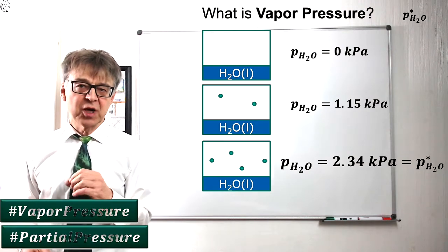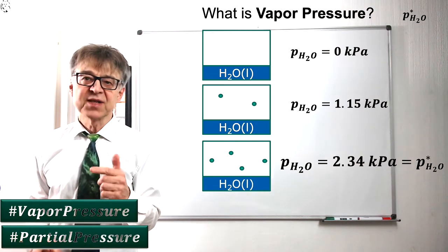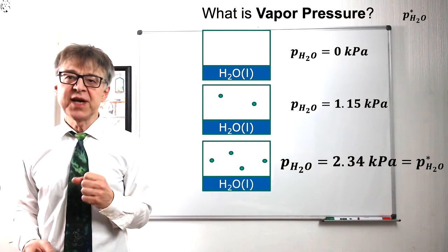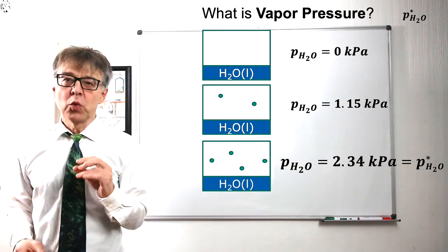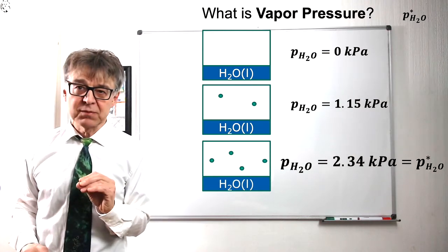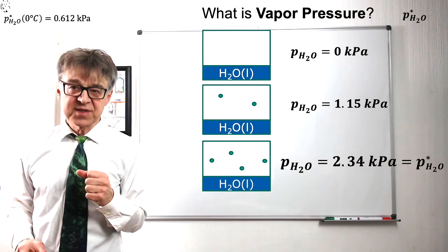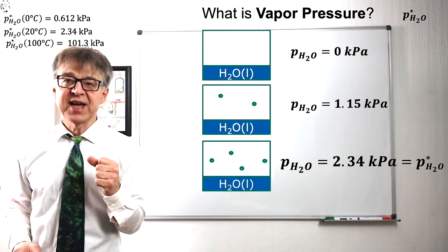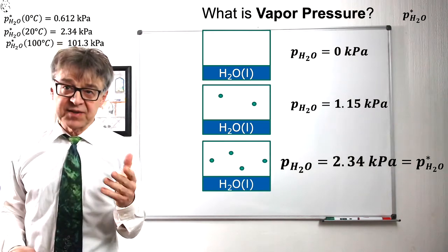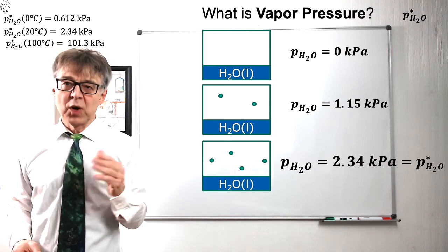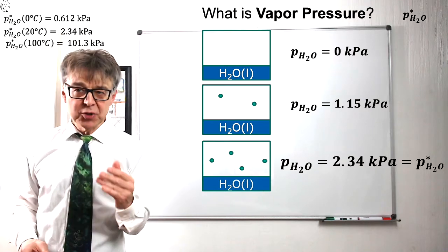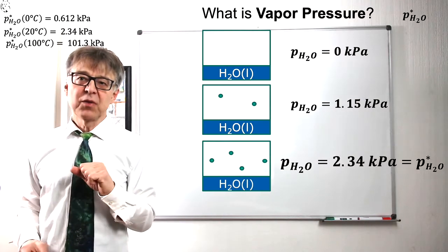The partial pressure over a condensed phase at equilibrium is called vapor pressure. The vapor pressure of water at 20°C is 2.3 kPa. We mark vapor pressure with an asterisk. The vapor pressure strongly depends on temperature. At 0°C it is 0.6 kPa and at 100°C, 101.3 kPa—that's exactly one atmosphere. Well, 100°C is the standard boiling point of water. It's defined to be the temperature at which the vapor pressure is equal to the external pressure.